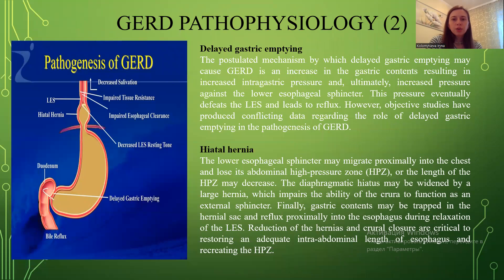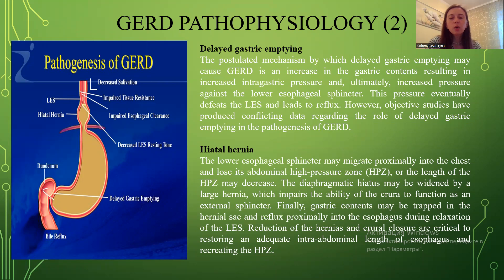Continuing with pathophysiology and delayed gastric emptying: the postulated mechanism by which delayed gastric emptying may cause gastroesophageal reflux disease is that increased gastric contents result in increased intragastric pressure, and ultimately increased pressure against the lower esophageal sphincter. This pressure eventually overcomes the lower esophageal sphincter and leads to reflux. However, objective studies have produced conflicting data regarding the role of delayed gastric emptying in the pathogenesis of reflux disease.